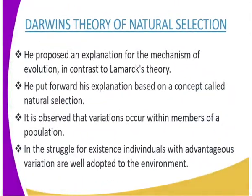Now we are going to look at our second scientist, Charles Darwin. We are going to look at Darwin's theory of natural selection, whereby in his book on the origin of species, he proposed an explanation for the mechanism of evolution in contrast to Lamarck's theory. Darwin put forward his explanation based on a concept called natural selection.